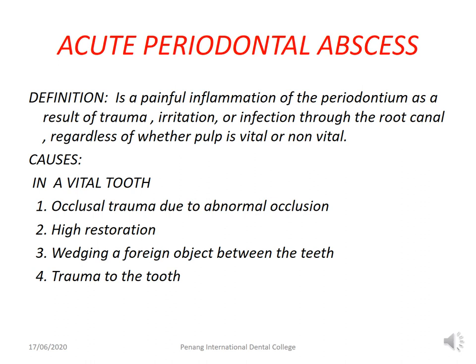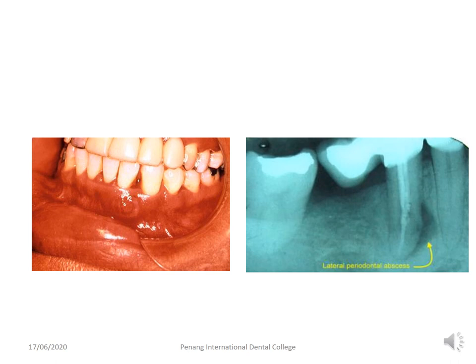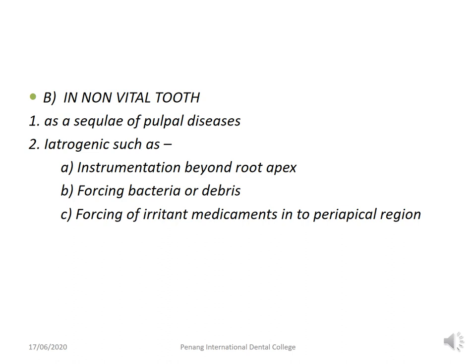The next condition is acute periodontal abscess, defined as a painful inflammation of the periodontium as a result of trauma, irritation, or infection through the root canal, regardless of whether the pulp is vital or non-vital. Causes in a vital tooth include occlusal trauma due to abnormal occlusion, high restoration, wedging a foreign object between the teeth, and trauma to the tooth. In a root-canal-treated tooth, infection may spread to the periodontium from lateral canals in a failed root canal treatment, leading to acute periodontal abscess.